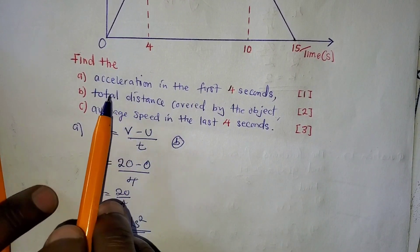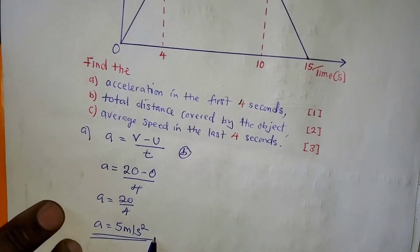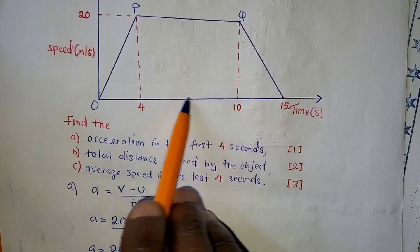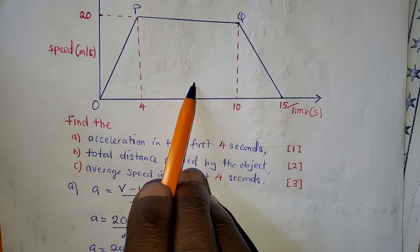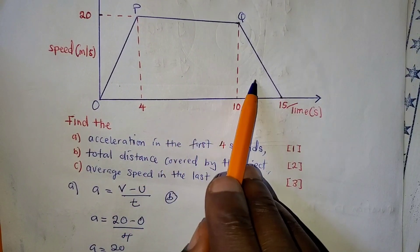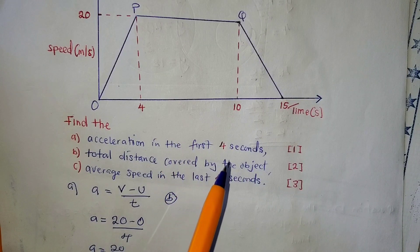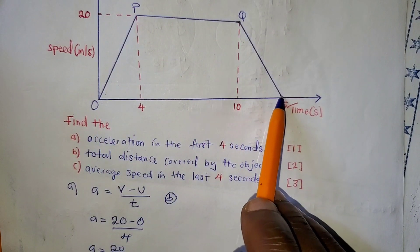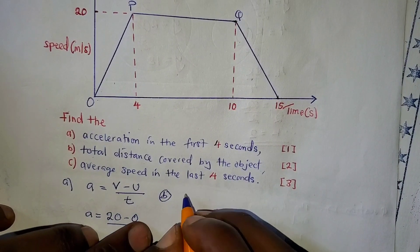Part (b) asks us to find the total distance covered by the object. Do not use the formula speed = distance ÷ time. The distance here is the area under the graph. When you look at the shape, you have two right-angled triangles and a rectangle — you could find those areas and add them. But there is also another way: the whole shape is a trapezium, so we can use the trapezium area formula.